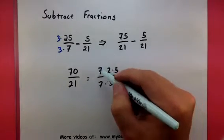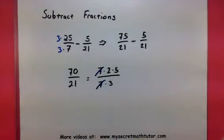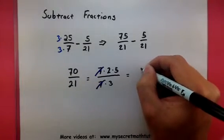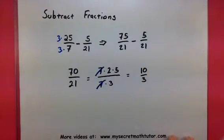Well, there's an extra 7 that is common. So we'll cancel that out. And this will leave us with 10 over 3 as our final answer.